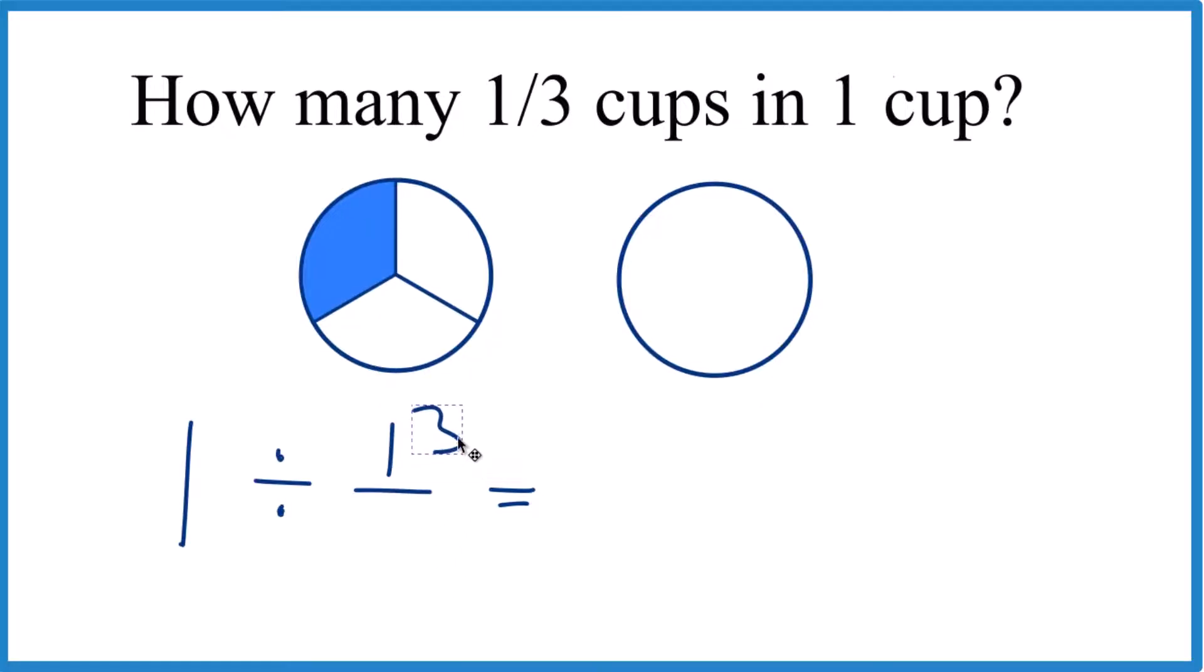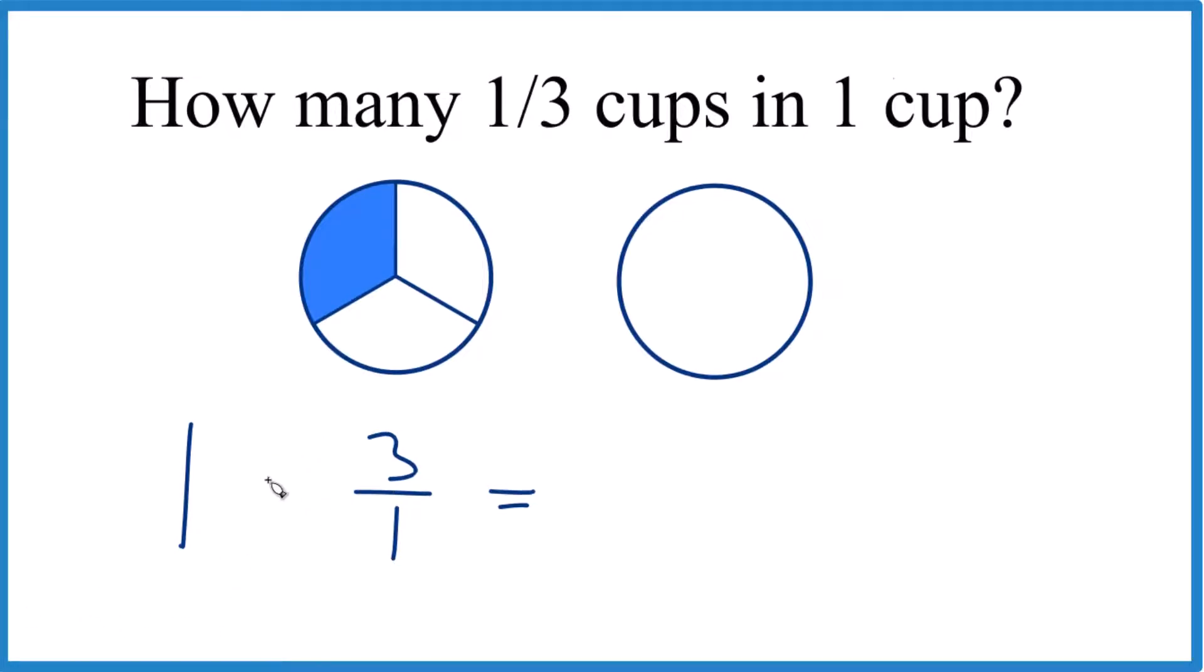We move the three up here and the one down here. That's the reciprocal of one-third, three over one, because then instead of division, we can just do multiplication. One times three over one is just three over one, and three divided by one is three.